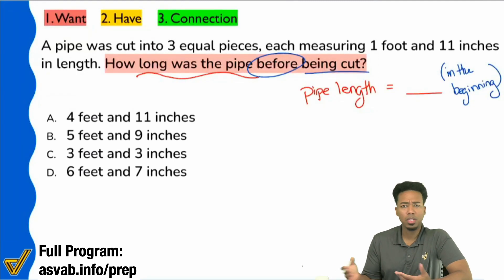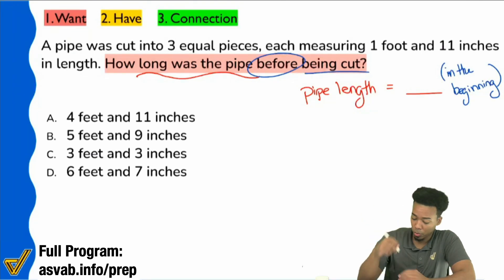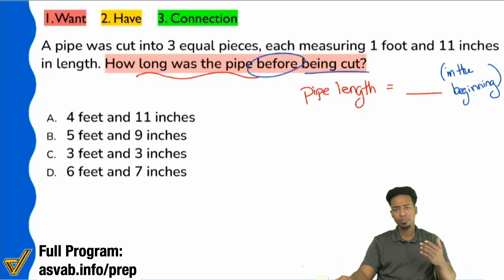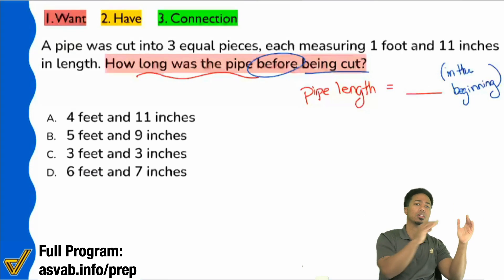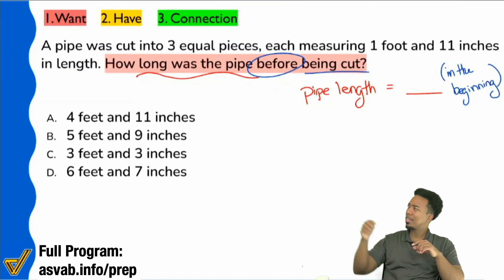Let's see what we got here. Pipe length equals blank, but in the beginning. Let's read the information and see how we can find the beginning length. Keep emphasizing that as you try to solve the problem - beginning length, work backwards. It says a pipe was cut into three equal pieces, each measuring one foot and 11 inches in length. If you imagine that, it sounds like we had a pipe, and then we cut it into three equal pieces - one, two, and three. Does that sound like what happened? We had a pipe and then we cut it into three equal pieces.